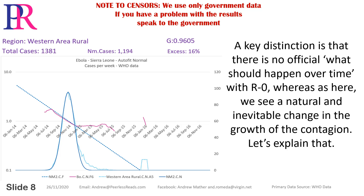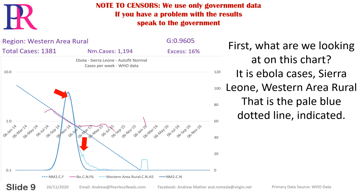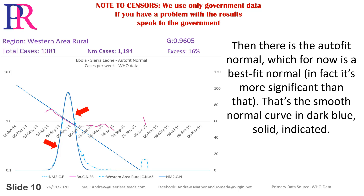A key distinction is that there is no official indication of what should happen over time with R0, whereas here we see a natural and inevitable change in the growth of the contagion. Let's explain that. What are we looking at on this chart? It is Ebola cases, Sierra Leone, Western Area Rural — that is the pale blue dotted line indicated. Then there is the autofit normal, which for now is a best fit normal. In fact, it's more significant than that. That's the smooth normal curve in dark blue, solid, indicated.